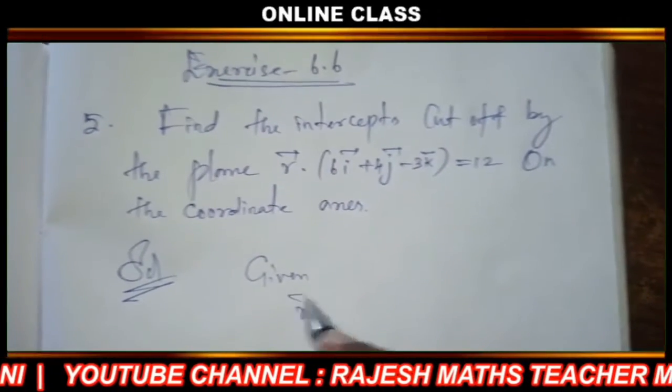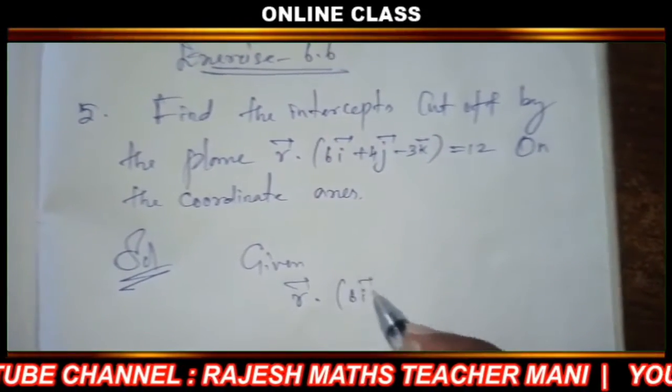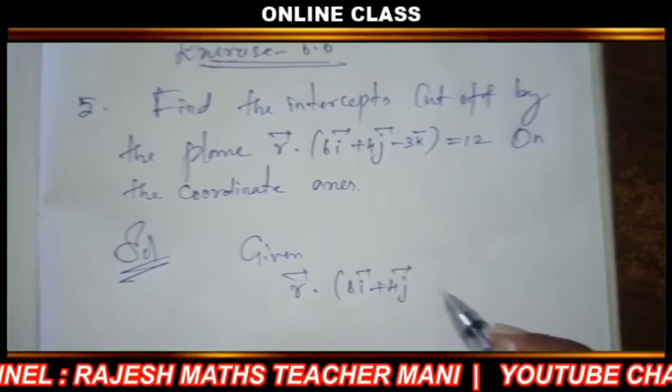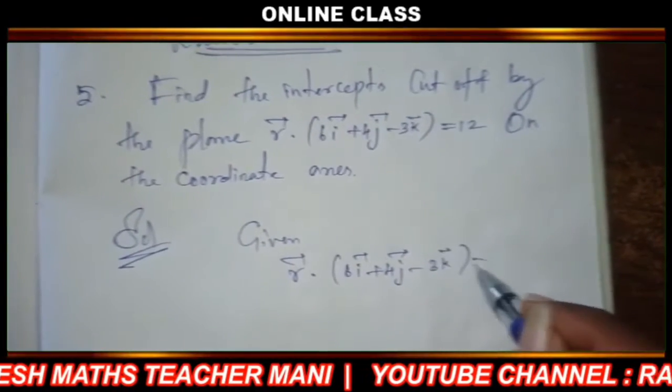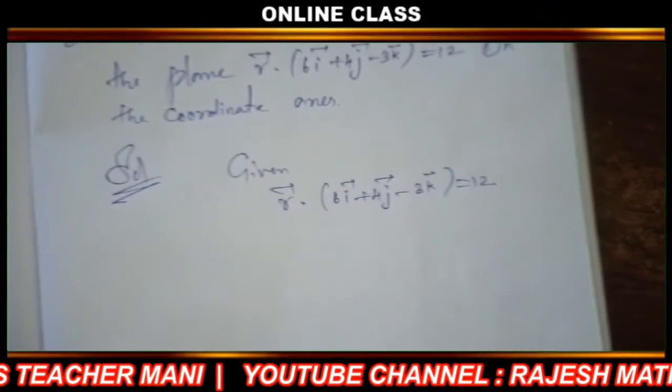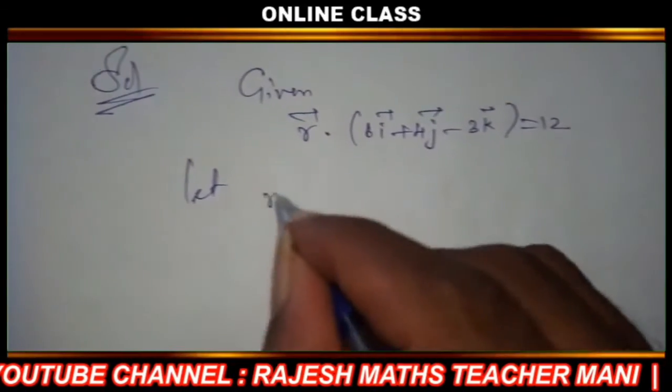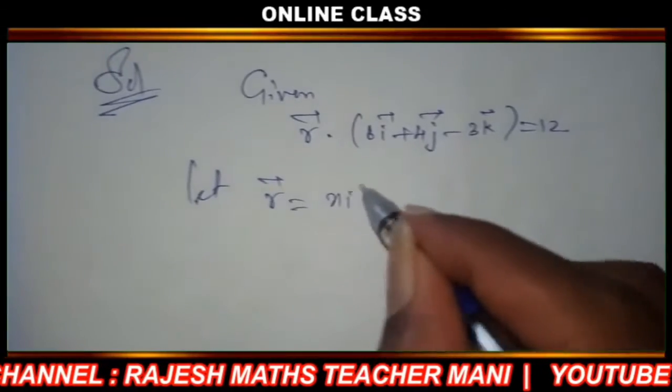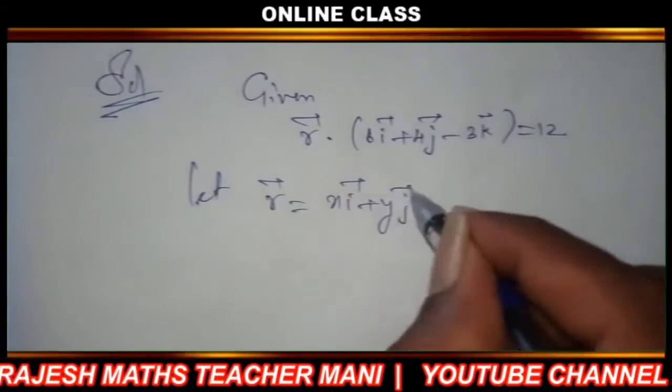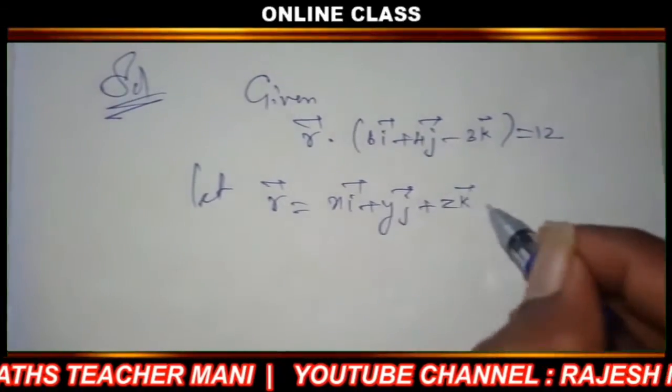Given: r vector dot (6i vector plus 4j vector minus 3k vector) equals 12. Let r vector equal xi vector plus yj vector plus zk vector.